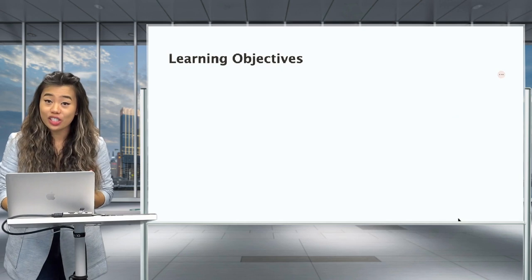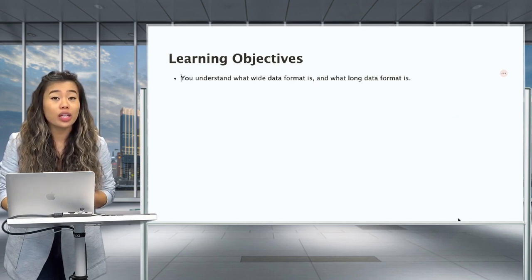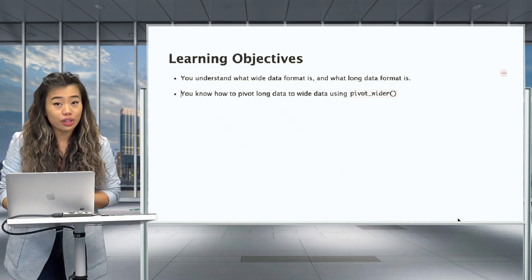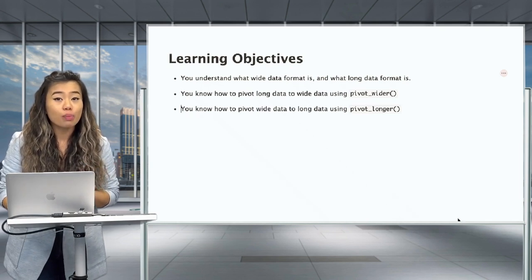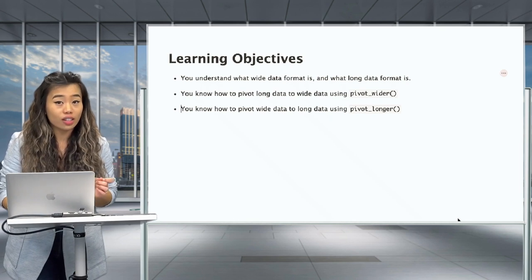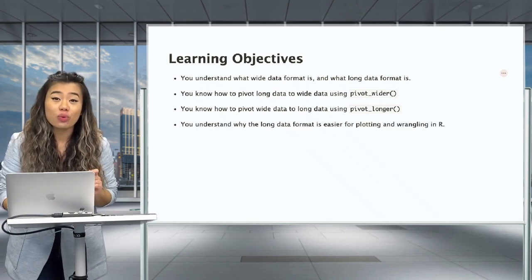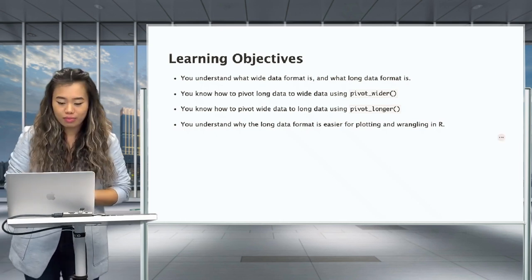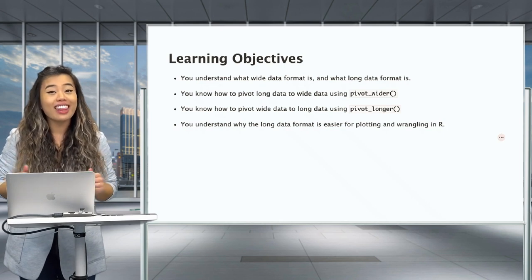By now, if you've been paying attention, you should know the difference between long and wide data formats. You should also know how to pivot from long to wide data formats using pivot_wider, and how to pivot from wide to long using pivot_longer. And finally, you understand why long formatted data is much preferred for plotting and data wrangling in R. Well, that's it for me today — thank you so much for paying attention. I'll see you in the next lesson.